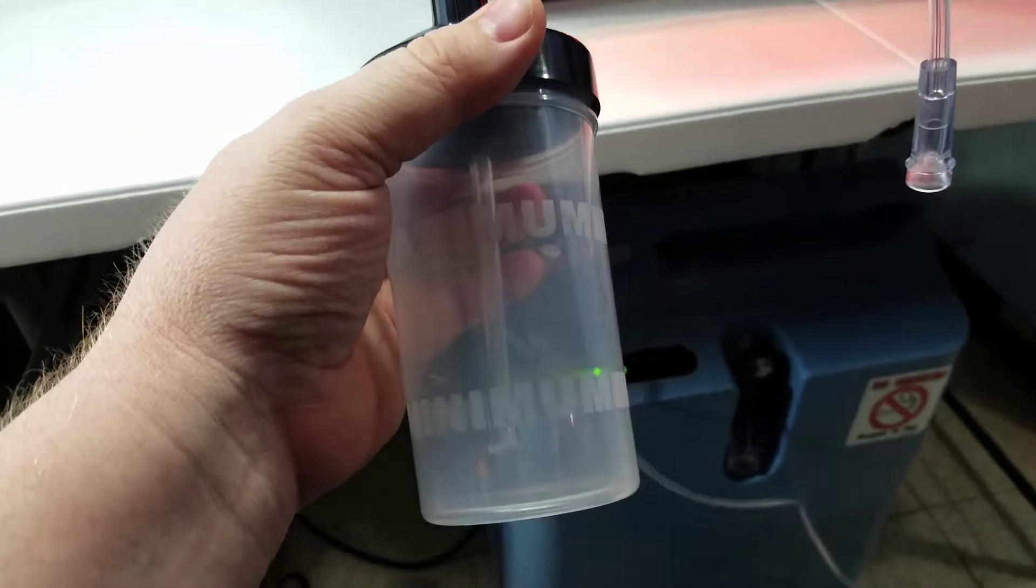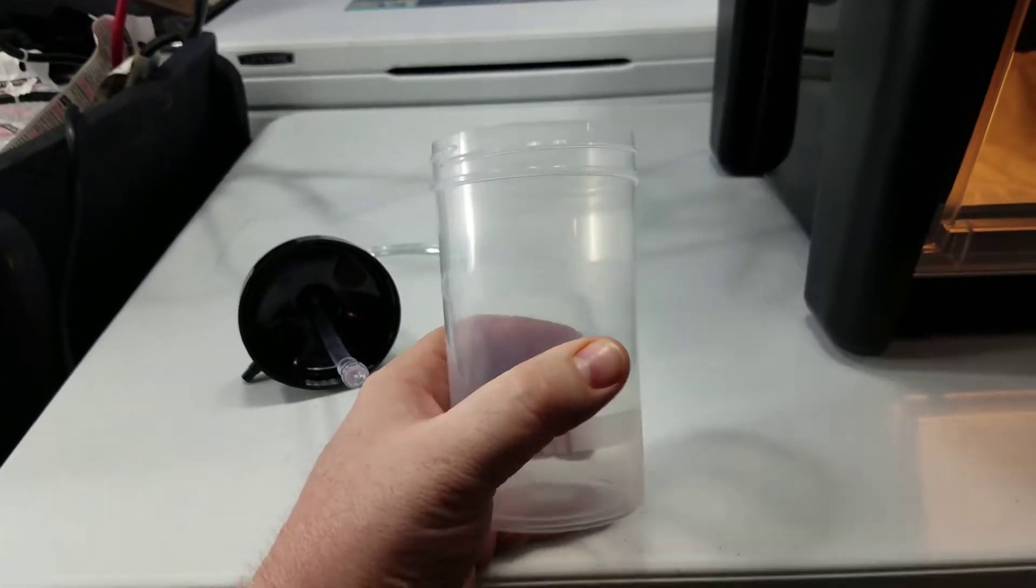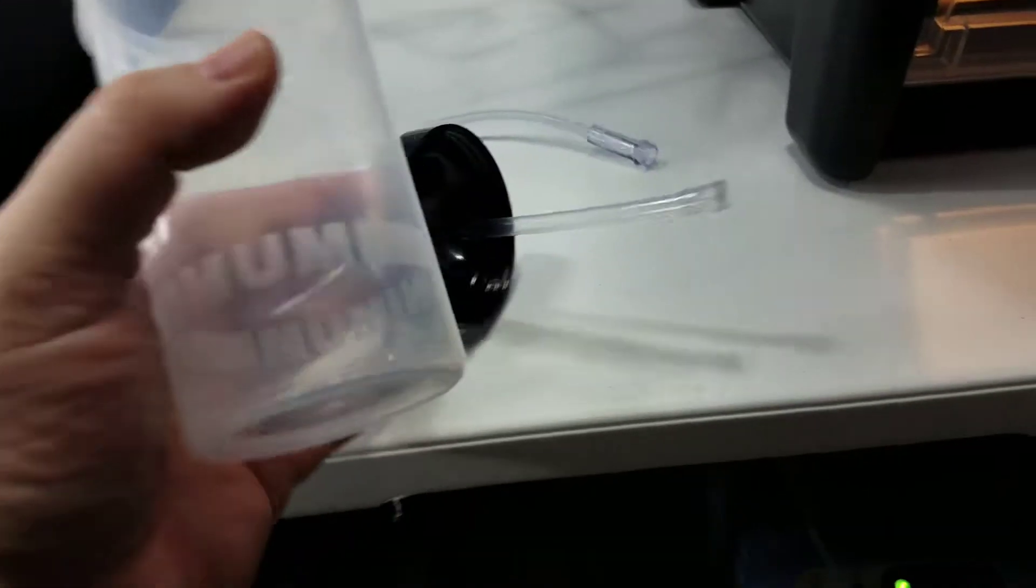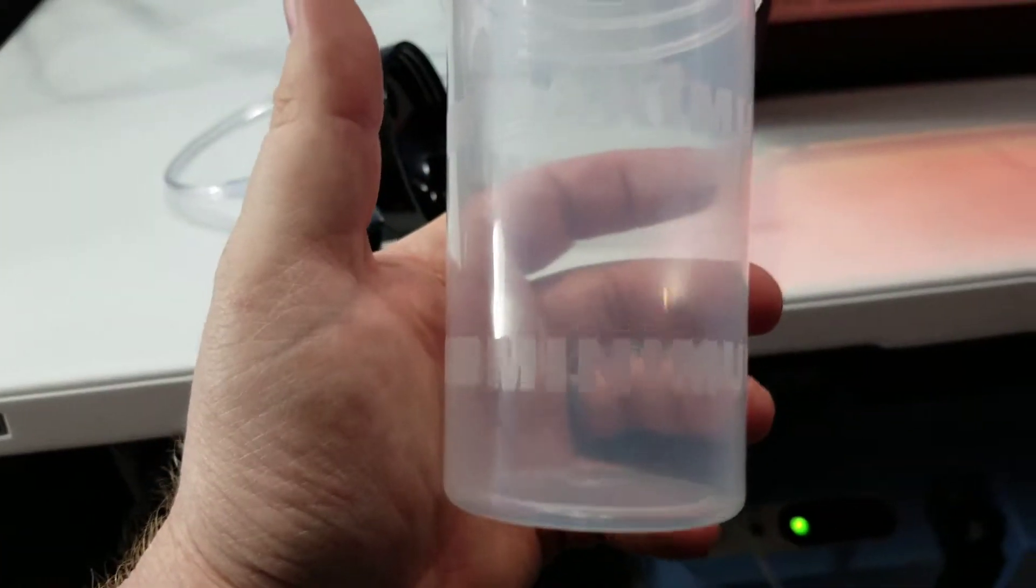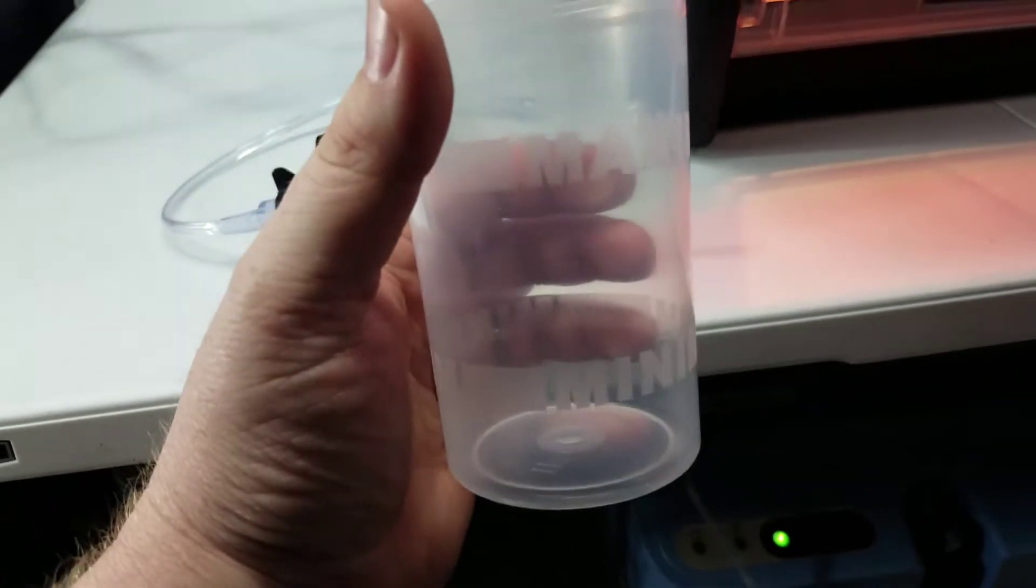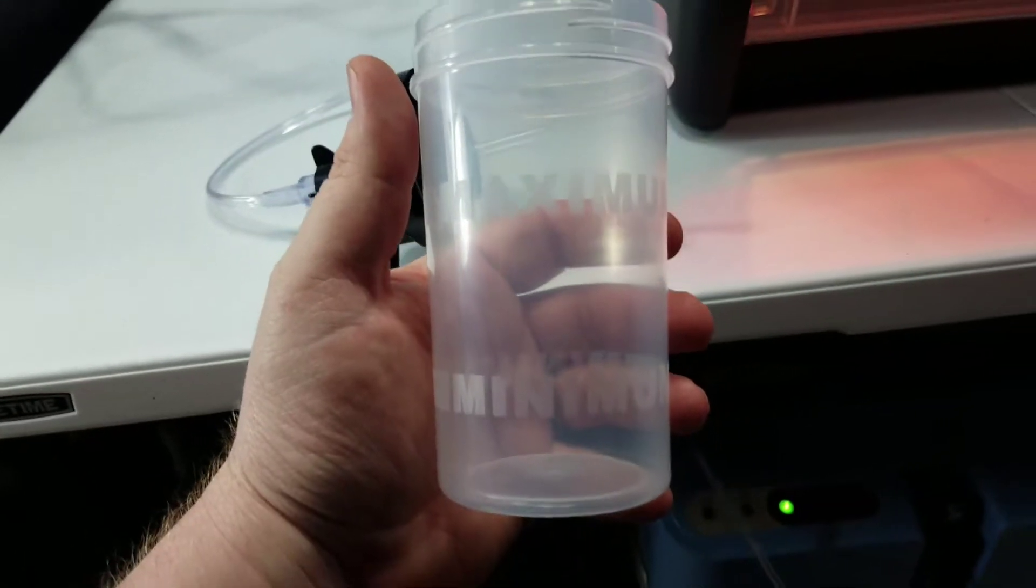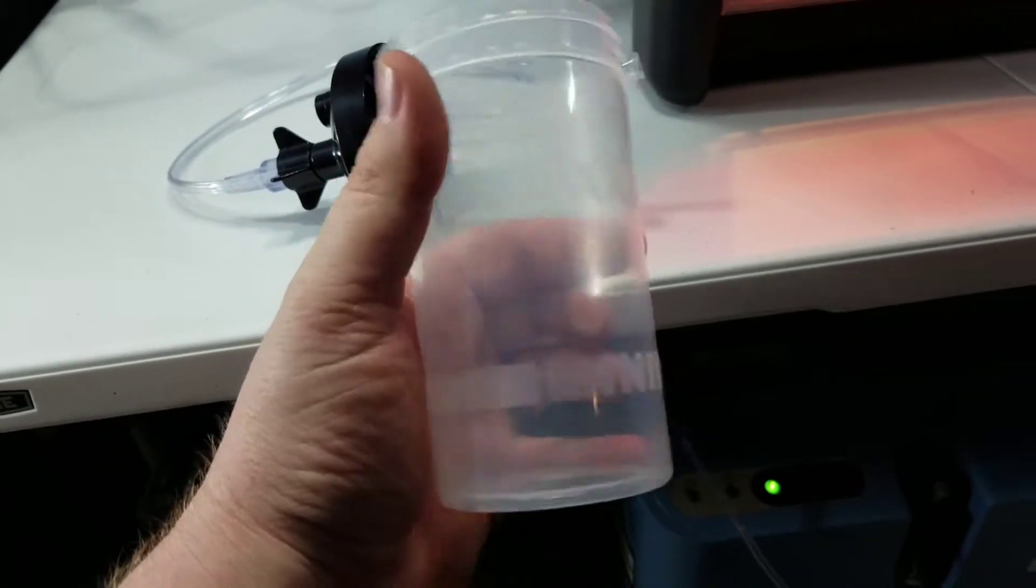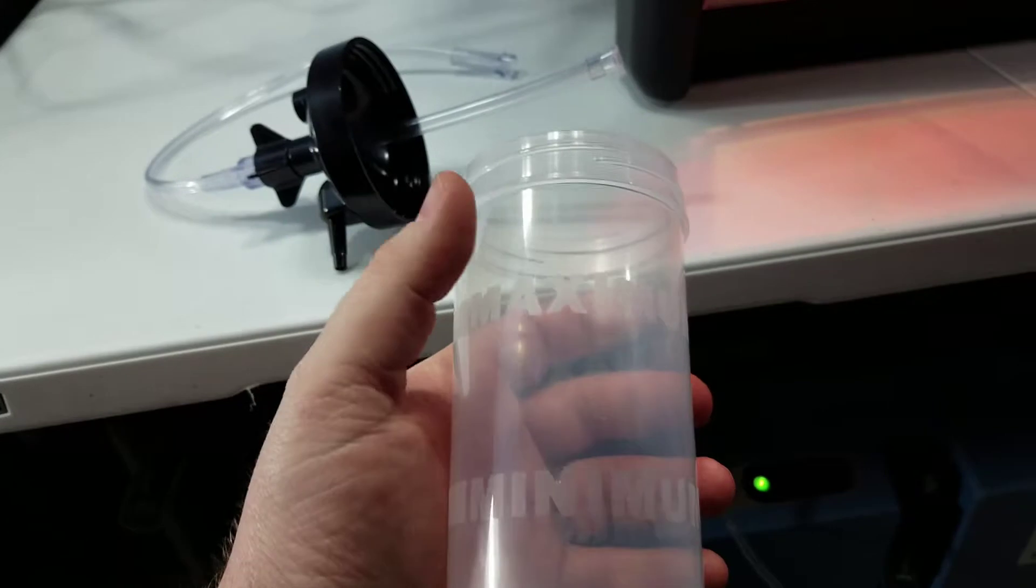Before I filled it up with water, I thought I would just show you real quick that the black top unscrews from the cup here and you've got two lines - a minimum and maximum. You want to use distilled water in the cup so it prevents any lime or calcium buildup that can affect the operation of the bubbler cup.